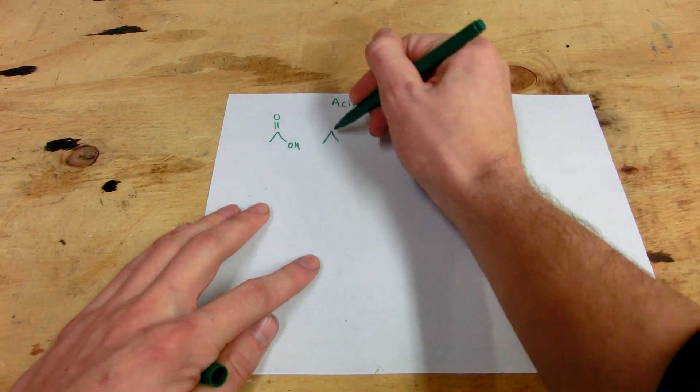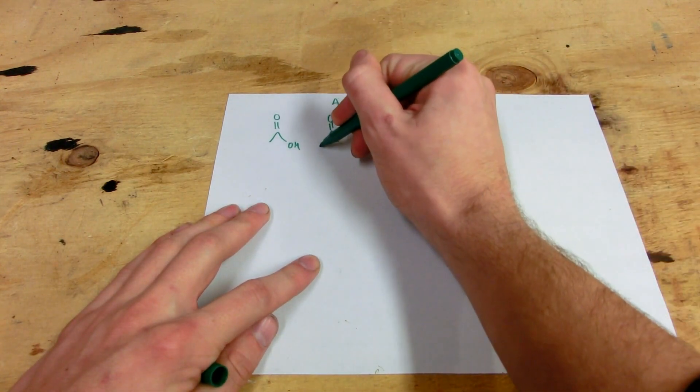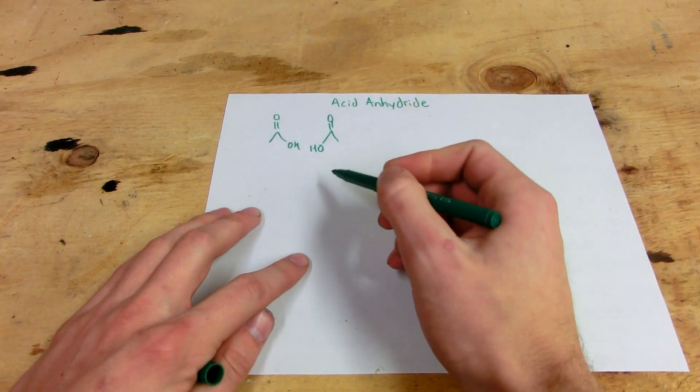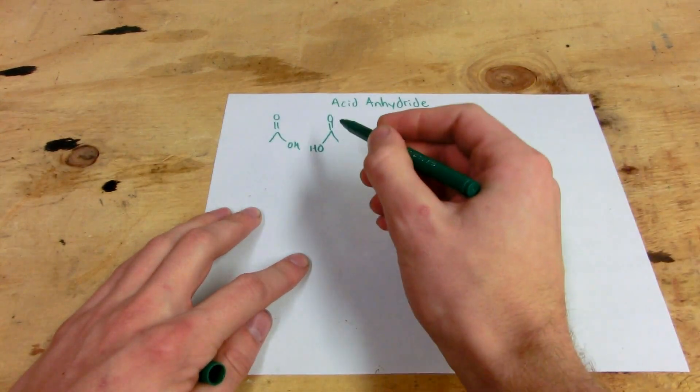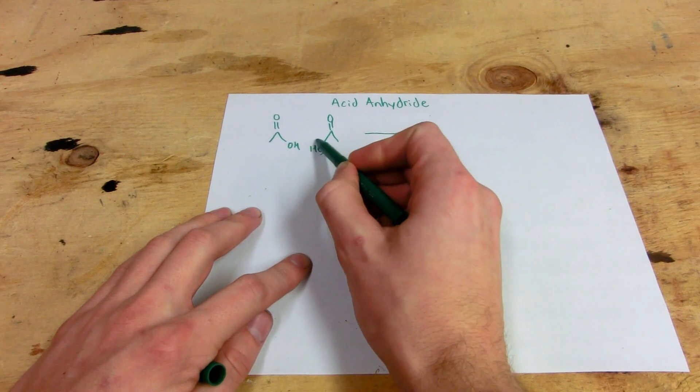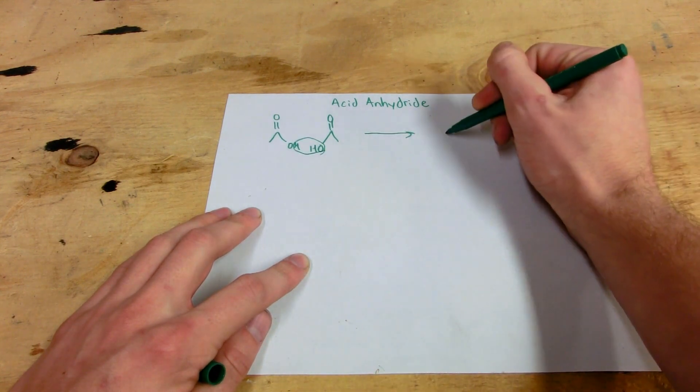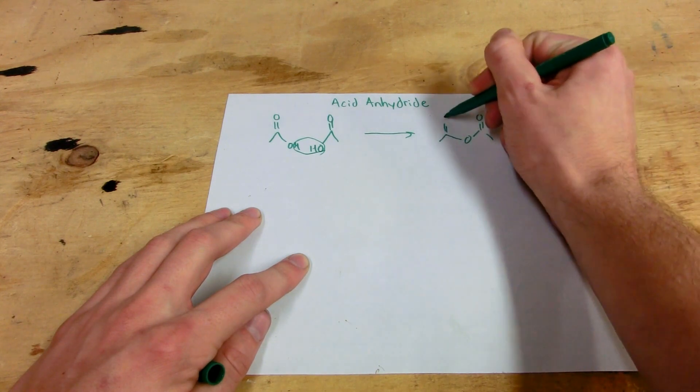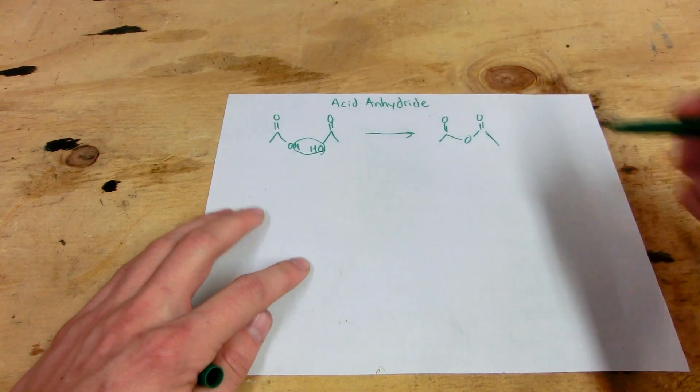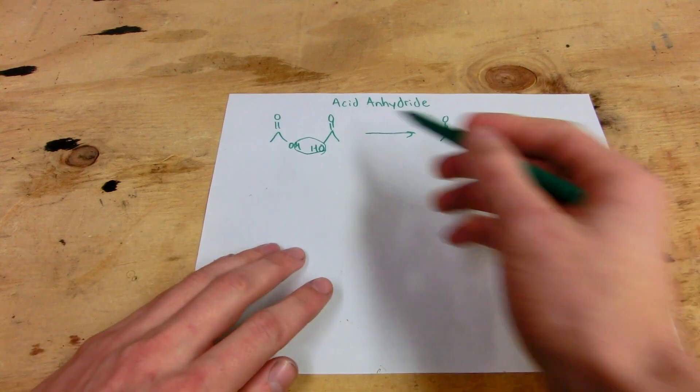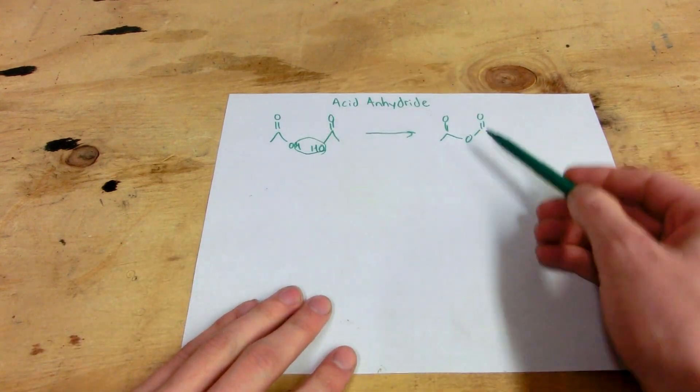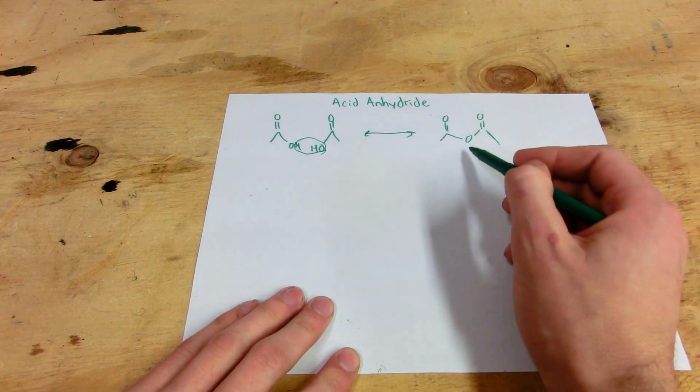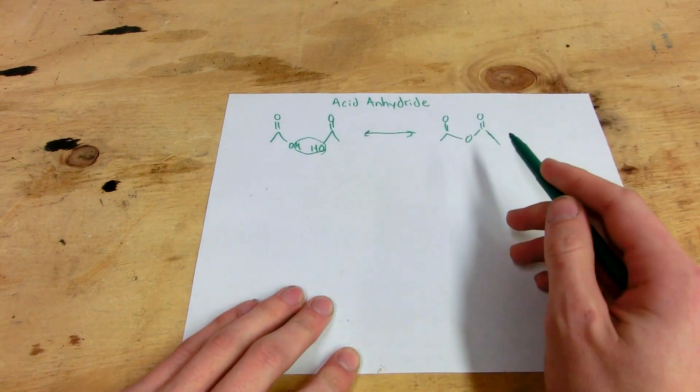So what happens is we take two acetic acids and put them back to back and try and take a water out of these. Well, what we get, we can find water right here as an OH and an H. So we take those out and we end up with this compound right here, known as acetic anhydride. Kind of neat, huh? So anyway, by dehydrating acids, we can form their anhydrides. And this works also in reverse, that by adding water to anhydrides, we can convert them back to their acids.